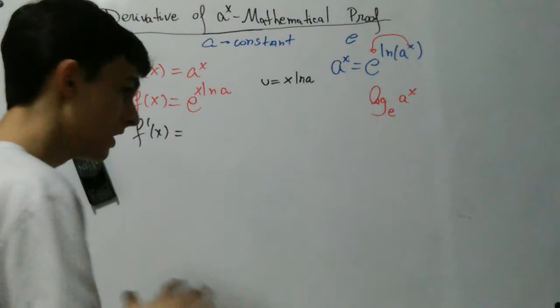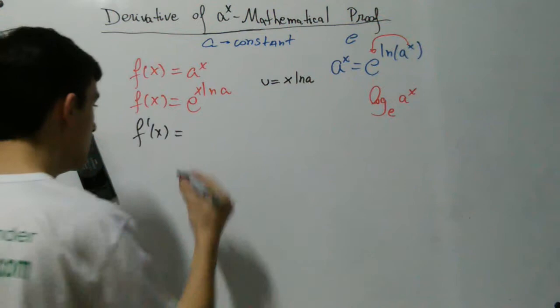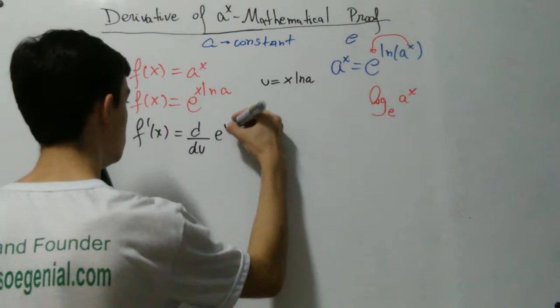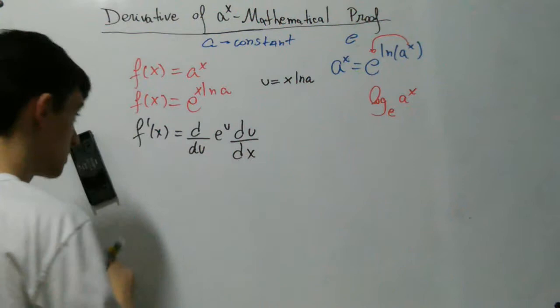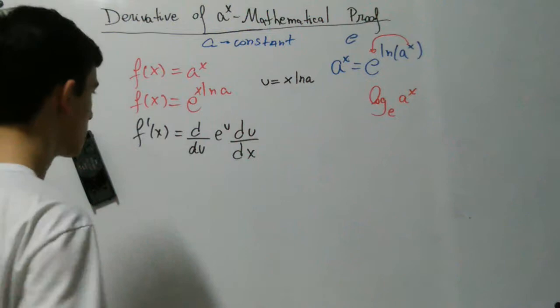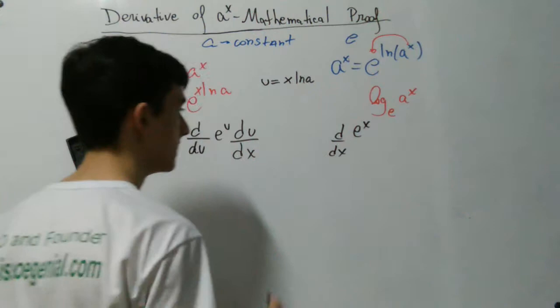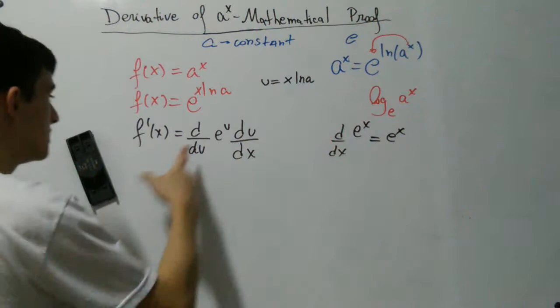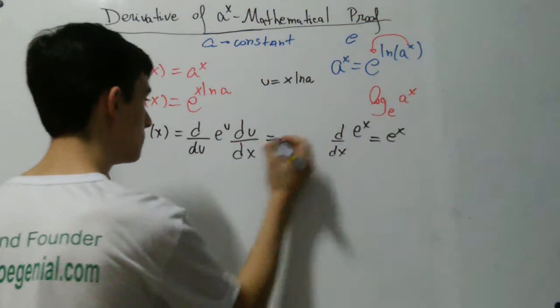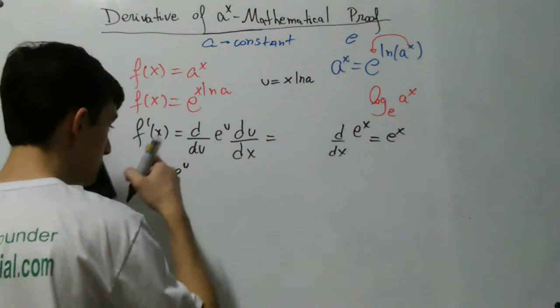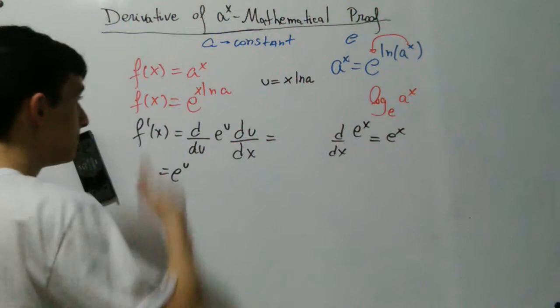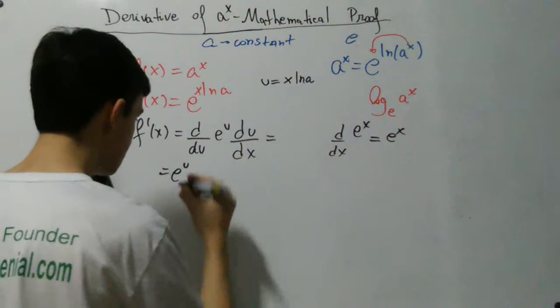In writing, the derivative of this function is equal to the derivative with respect to u of e to the u, times the derivative of u with respect to x. We know that the derivative of e to the x is e to the x, so the derivative with respect to u of e to the u is e to the u. So this is equal to e to the u, multiplied by the derivative of u with respect to x, which is exactly natural log of a.